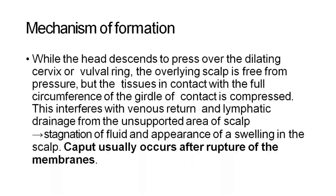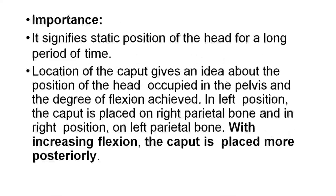Mechanism of formation: While the head descends to press over the dilating cervix or vulval ring, the overlying scalp is free from pressure, but the tissues in contact with the full circumference of the girdle of contact are compressed. This interferes with the venous return and lymphatic drainage from the unsupported area of scalp, causing stagnation of fluid and appearance of swelling in the scalp. Caput usually occurs after rupture of membranes.